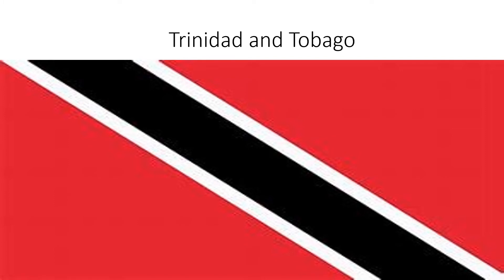Trinidad and Tobago: red, with two red triangles in the corners, and there's a big black line, and there are two white lines next to the big black line.